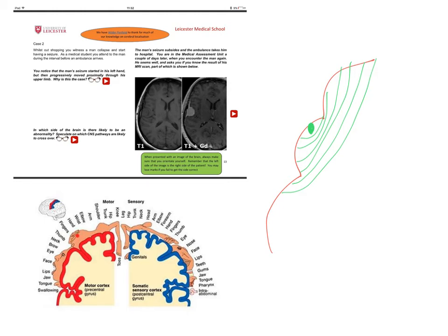Okay, now we're asked to think about why does the twitching in his left hand then progress proximally through the upper limb. Well the explanation for this is once again this forest fire analogy.